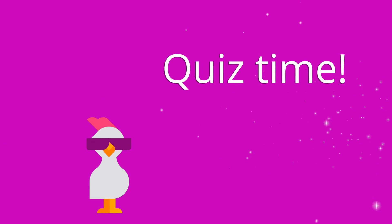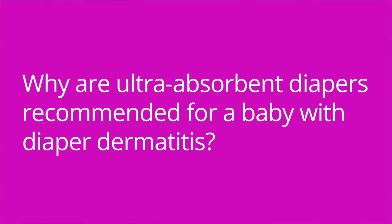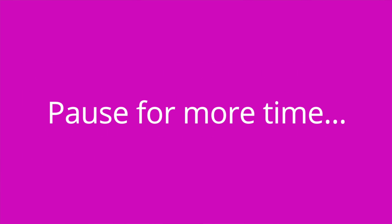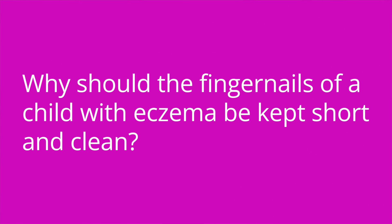It's quiz time — I've got three questions for you. Question number one: why are ultra-absorbent diapers recommended for a baby with diaper dermatitis? The answer is they help draw wetness away from the baby's skin. Question number two: what kind of ointment should be applied to the baby's diaper area when diaper dermatitis is present? The answer is a barrier cream, such as a zinc oxide-based ointment. Question number three: why should the fingernails of a child with eczema be kept short and clean? The answer is to minimize scratching and help prevent skin damage and infection.